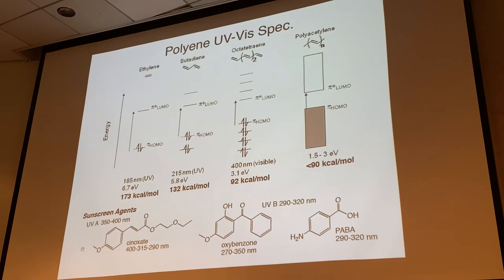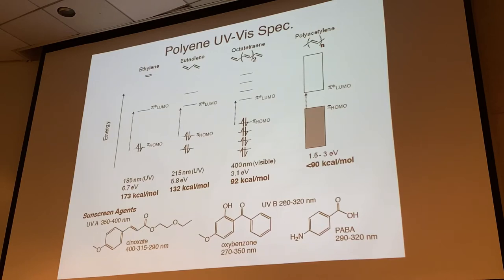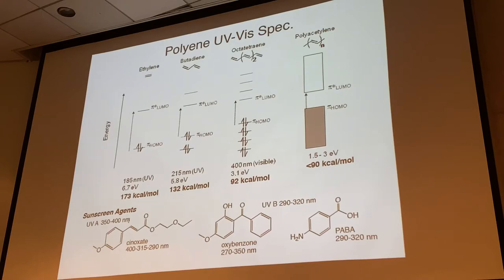UVA and UVB agents are both needed for a good sunscreen. UVB rays are higher energy, lower wavelength, and more damaging to cells - they dimerize thymidine and can cause cancer. PABA (para-aminobenzoic acid) and oxybenzone cover those absorbances. The bottom line: polyenes can absorb in the UV or even into the visible range at lower energy because they have more filled and unfilled molecular orbitals.